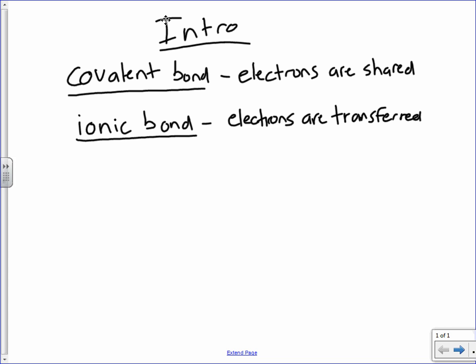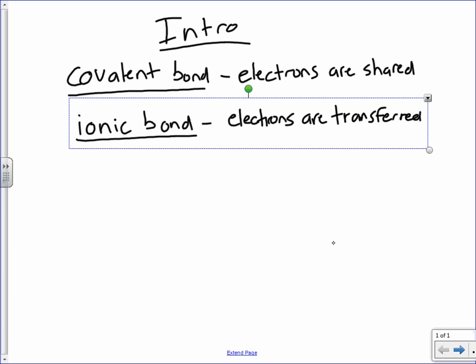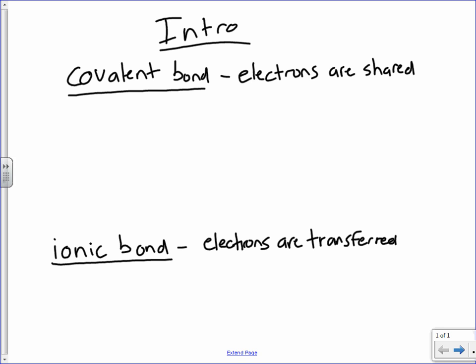Alright, in a covalent bond, happens between non-metals, always. If you've got a metal as part of a compound, it's not going to be a covalent bond. It's not going to be an ionic bond. I'm sorry. It's a covalent bond. So some examples would be like H2, hydrogen. Okay? Hydrogen is a non-metal, so that's covalent.